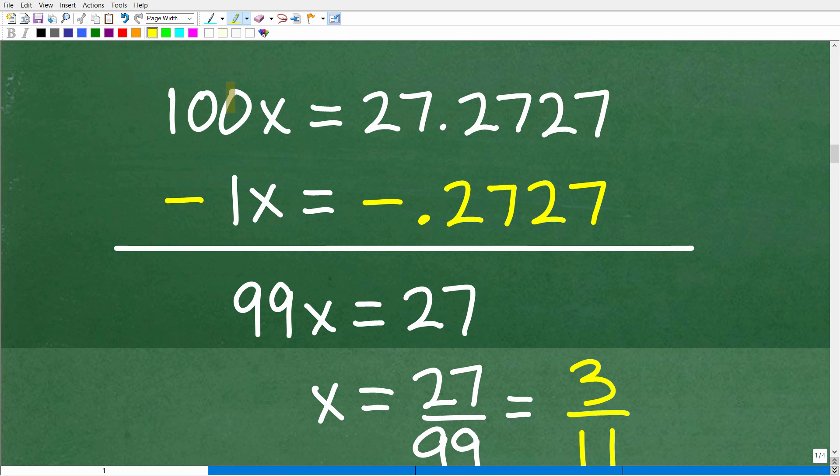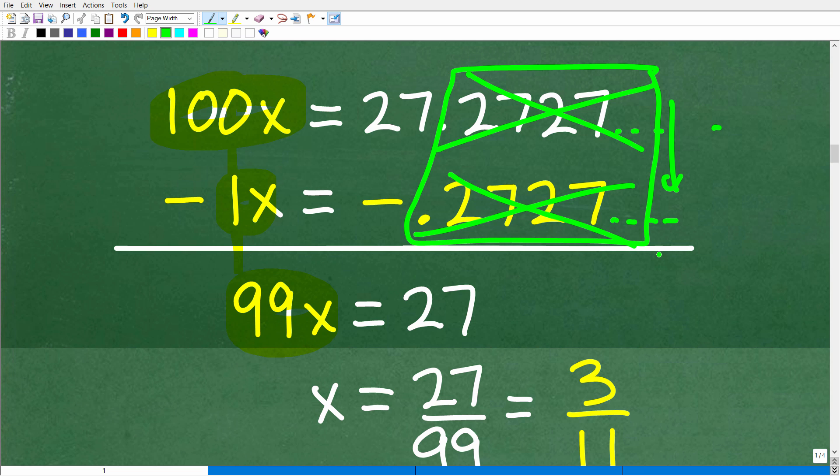So algebraically, it would look like this. When we add down, we're going to get 100x minus 1x, that's 99x. Now this is the best part of this problem. When we subtract this 0.272727 from 27.2727, remember this is repeating and this is also repeating. This is the repeating part. All this repeating part is going to get subtracted away. These are going to eliminate one another. And what we're left with is 99x is equal to 27.